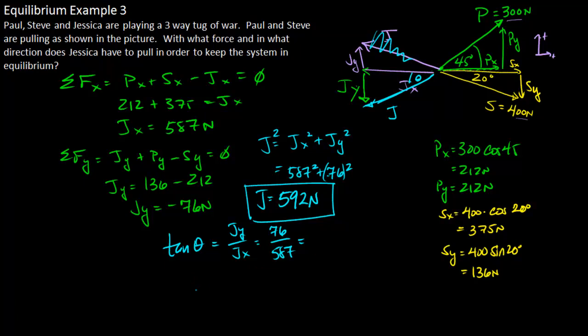And then we can say, we can take the inverse tangent of both sides. So if we take the inverse tangent of the tangent, that just cancels out the tangent, and we get theta, which is what we're looking for. If we take the inverse tangent of this side, we just get the inverse tangent of 76 over 587, which ends up being equal to about 7.4 degrees.